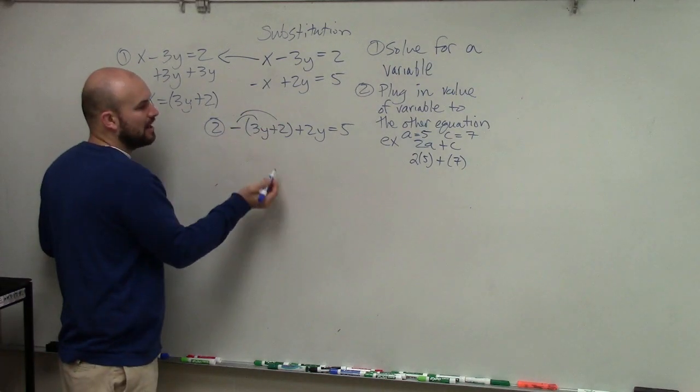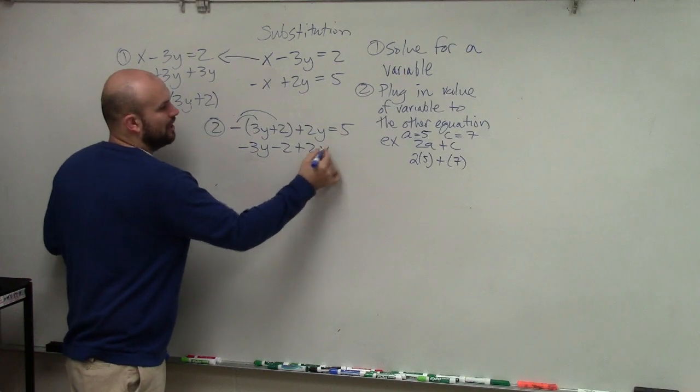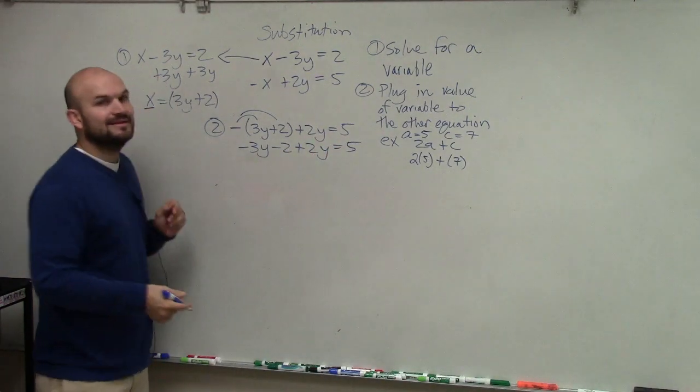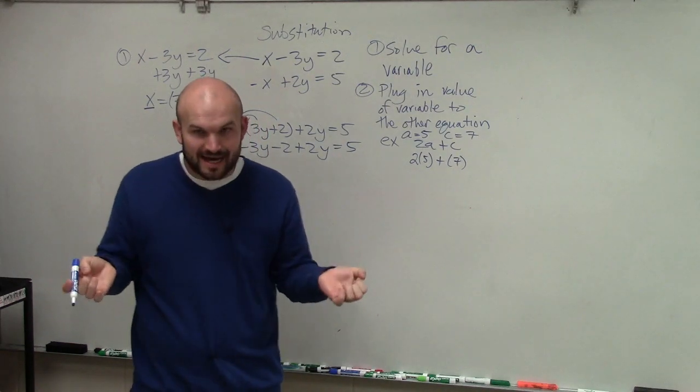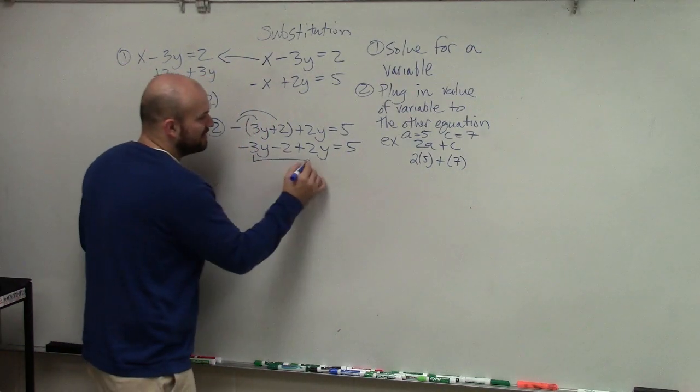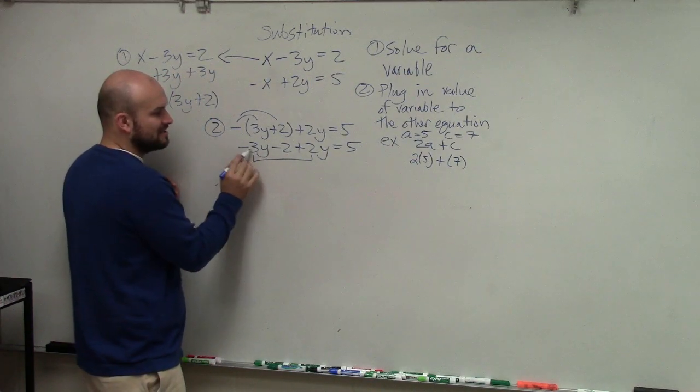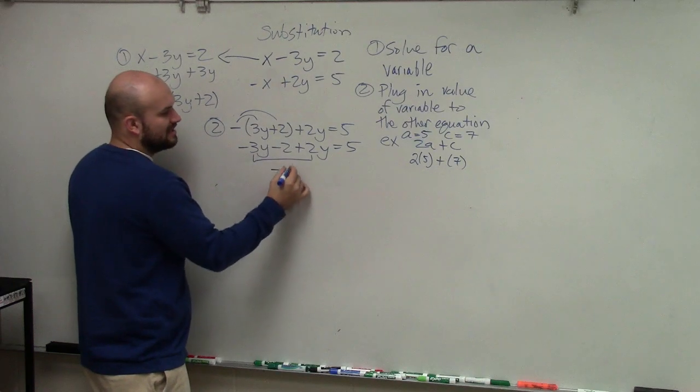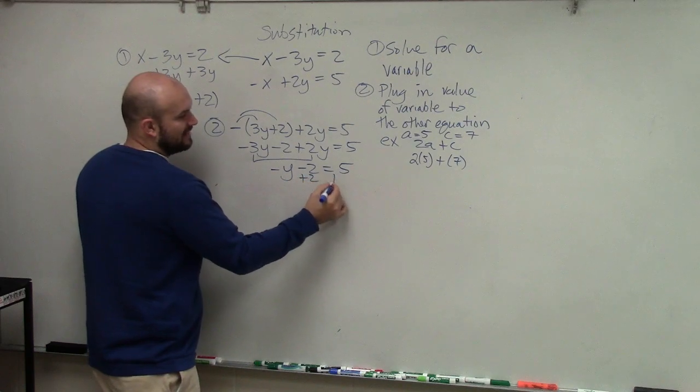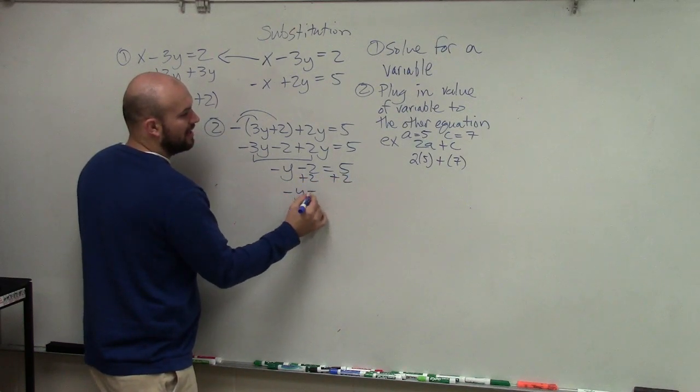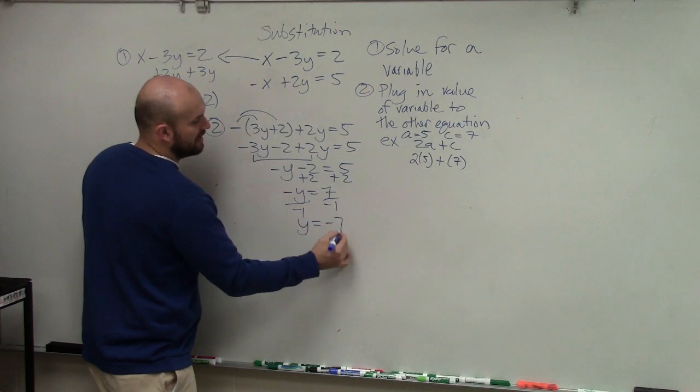So now we apply distributive property. So I have negative 3y minus 2 plus 2y equals 5. Now, remember, you have the same variable on the same side, so you can combine like terms. We don't add, subtract on the same side. We just combine like terms. So negative 3y plus 2y is negative y minus 2 equals 5. Now I add 2. Negative y equals 7. Divide by negative 1, y equals negative 7.